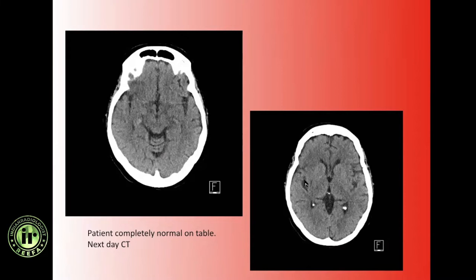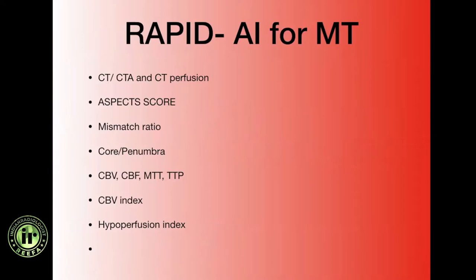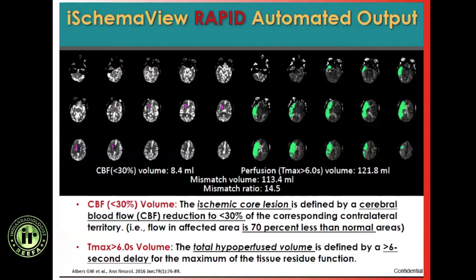A useful AI triage tool can give you the ASPECTS score, mismatch ratio, and other information regarding collaterals to identify the right patient for treatment. Here you can see a perfusion map is created in six seconds which identifies the area which is hyperperfused. You can also see a small core - CBF less than 30% - and it identifies the core and tells you what the mismatch volume is, so we can pick up patients that really need to be taken urgently for treatment.